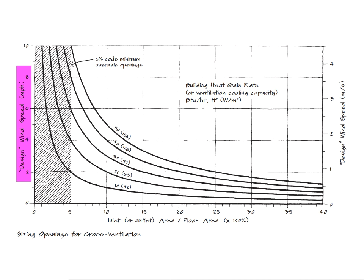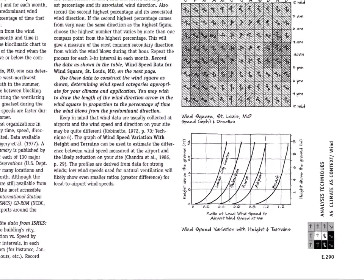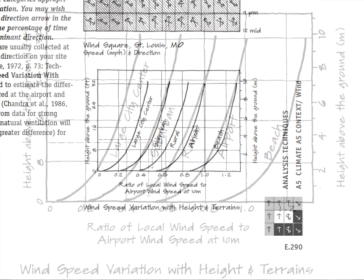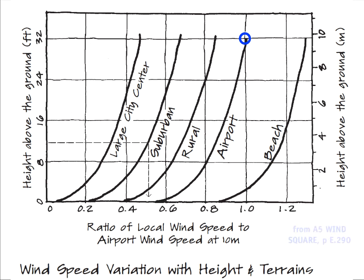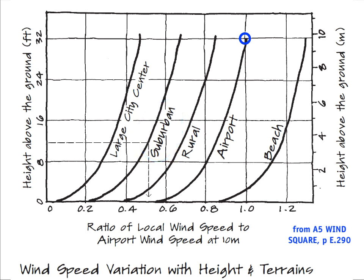The design wind speed is not necessarily the airport wind speed. You take the airport wind speed and modify it by a terrain factor. The airport measures wind at about 10 meters off the ground, giving a factor of 1.0 — 100% of the measured speed. Open beach locations may have more wind than the airport. Rural locations with trees and terrain, suburban areas, and large city centers each progressively reduce wind speed due to friction from buildings, trees, and terrain.